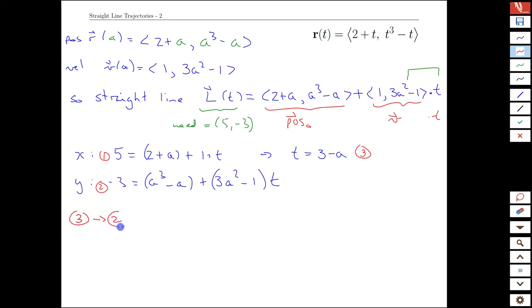And then if we take three and sub it into two, we'll eliminate one of the variables, and we should be able to solve for a. So t is equal to 3-a. Now we take this equation, and it's going to be a bit complicated with all the cubes, but we'll see what comes out here. We have a³-a + (3a²-1)(3-a). And that looks a little hideous at first.